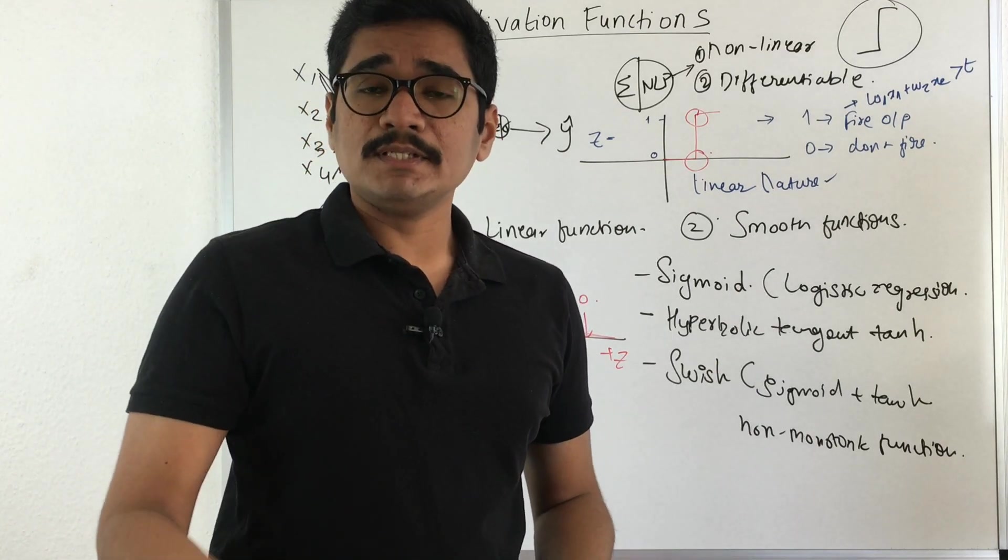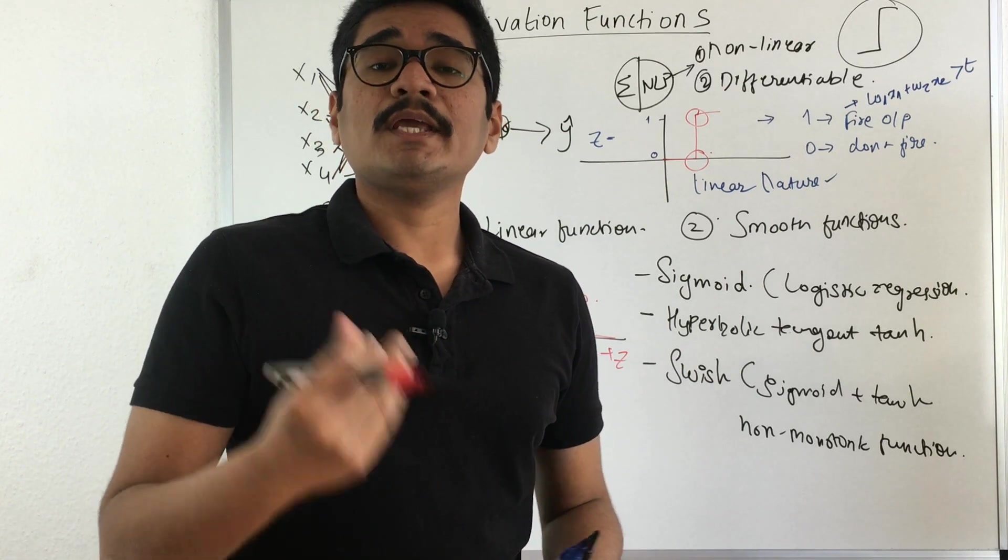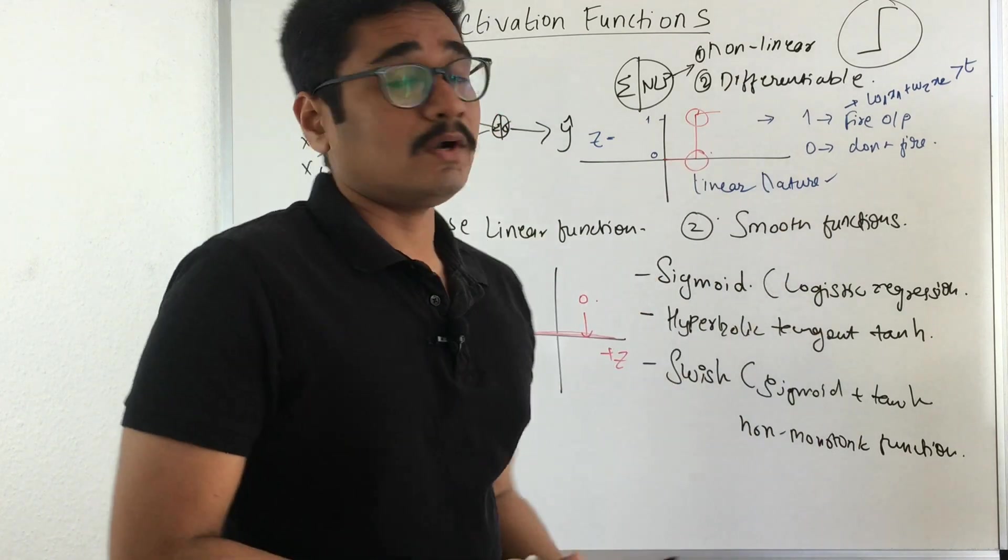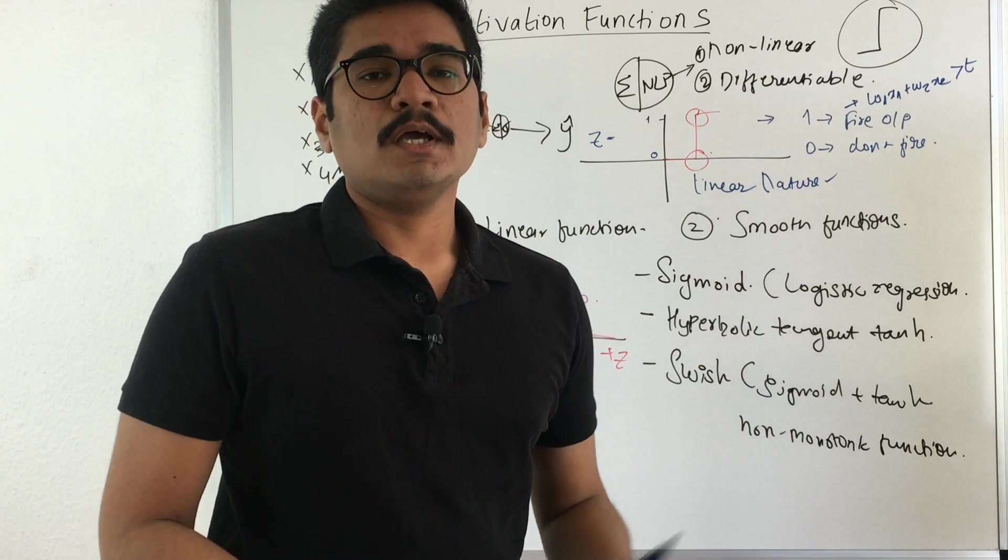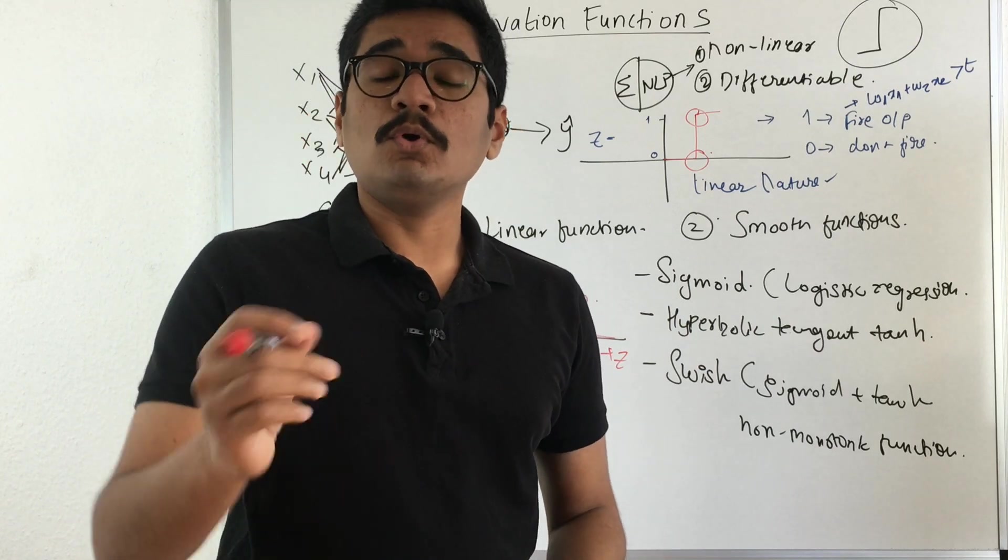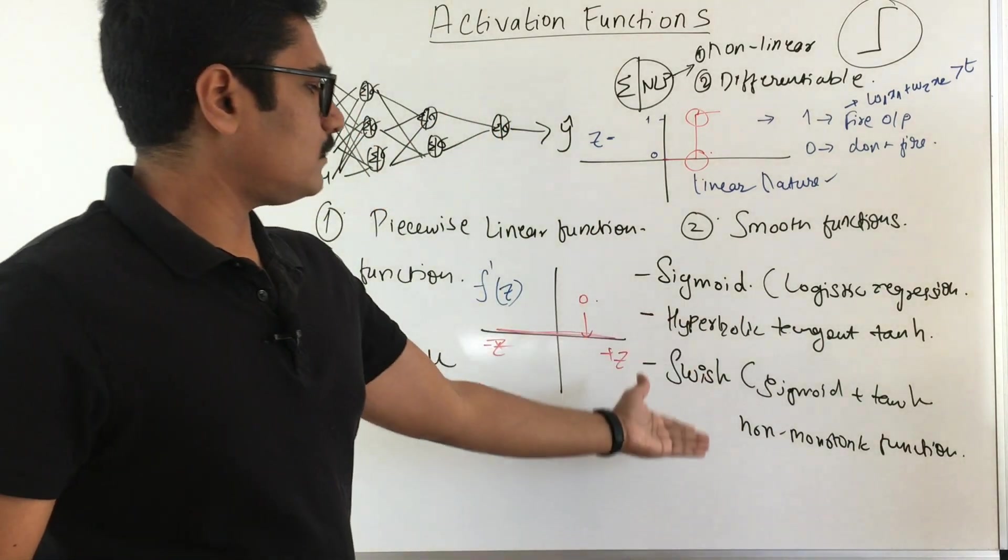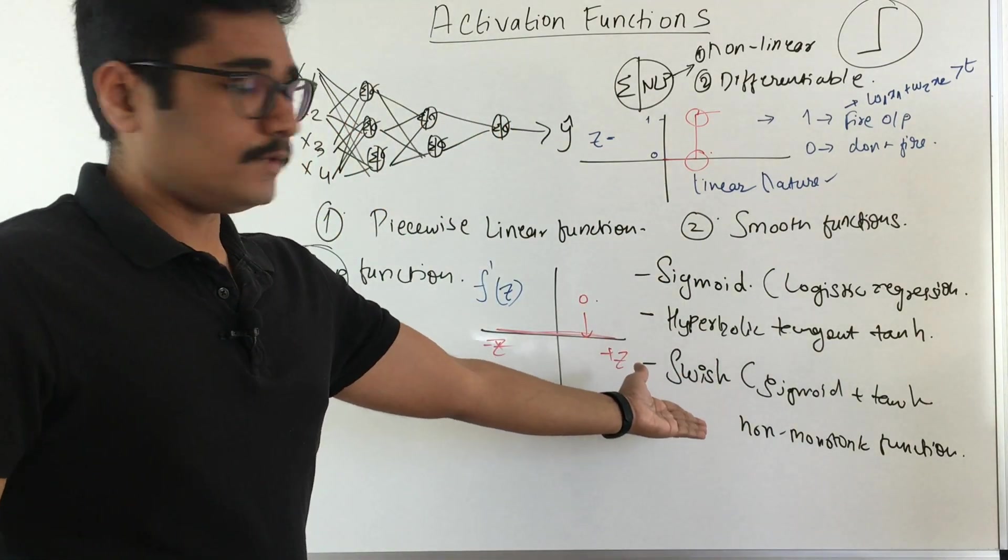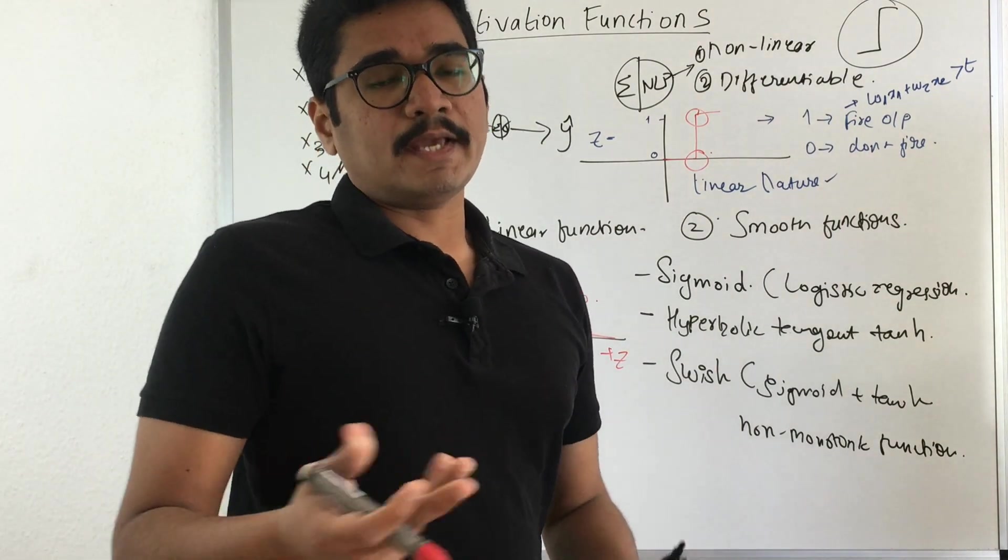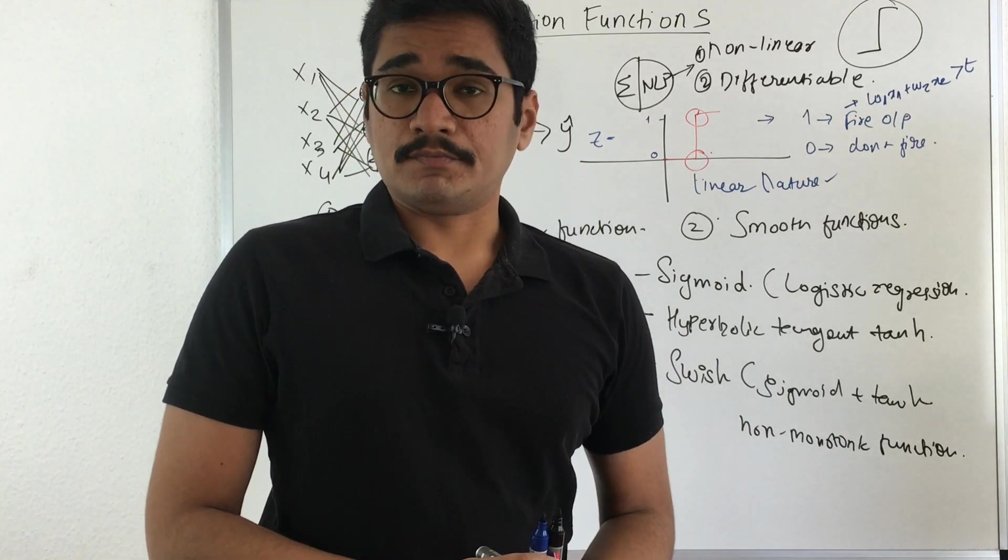So essentially you can't deploy this and it will not learn any nonlinearity which is present in real life. Most or all of the examples in our real world are nonlinear in nature. If you are putting any activation function which is not learning this nonlinearity, then what is the use of having this step function in your neural network? That is the main reason why we don't go with step functions and we have other variants which you can use: sigmoid, hyperbolic, swish function, ReLU and its variants. There you can use activation functions and achieve your activity in a much better way.